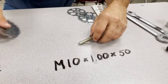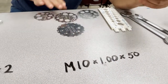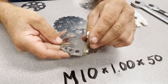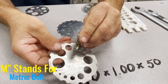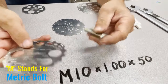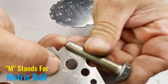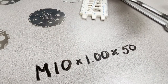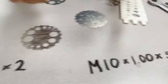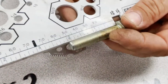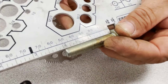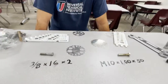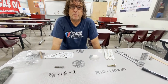Here's the metric bolt. It's not an 8 — 12 is too big — so it must be 10. Diameter first: 10 millimeter. Thread pitch next: 1.00. Then the length — it lines up exactly at 50 millimeters on the metric scale. That's how you write it down and how you ask for it when you go to the store to buy bolts.